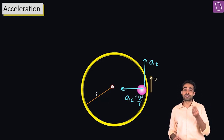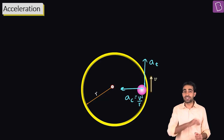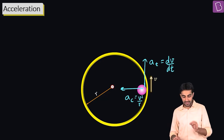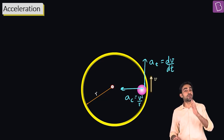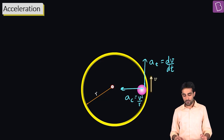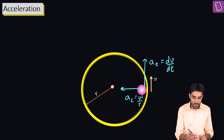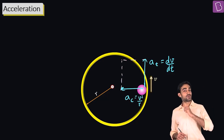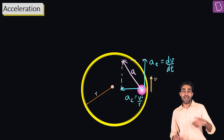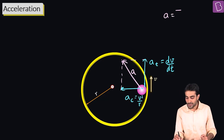The centripetal acceleration can only change the direction of velocity; it cannot change its magnitude. It is the tangential acceleration that is responsible for the change in the magnitude of velocity. When we find the vector sum of these two accelerations, we get the total acceleration: a = √(a_c² + a_t²).